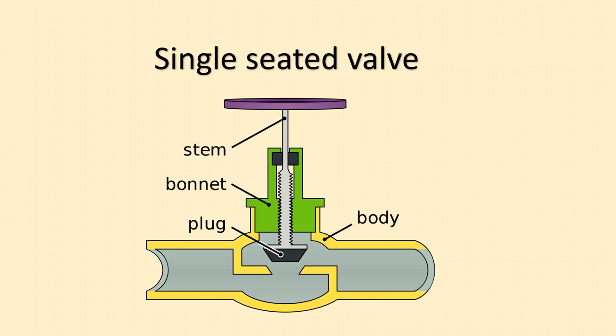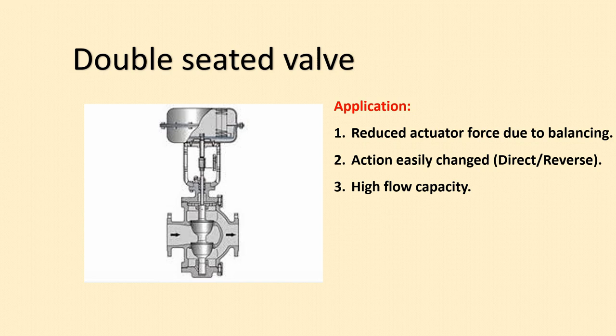Next is the single seated control valve. This body has a single seat and single plug arrangement. We have already covered the globe type valve previously so I won't explain the internals again here.